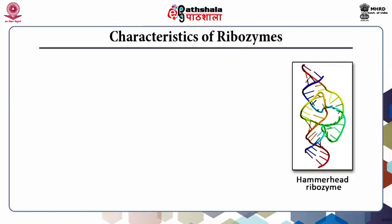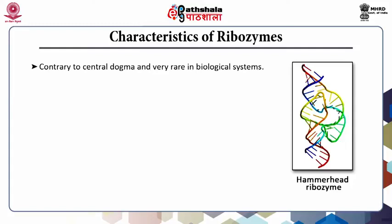Coming to the characteristics of ribozymes: ribozymes are contrary to the central dogma and are rare in living entities but with vital roles in life. The original discovery of ribozymes was in viruses which use RNA for storage of genetic information. These small RNAs were able to cut themselves out of larger RNA molecules without the involvement of any enzyme. Later it was shown that these RNAs were also able to cleave other RNA molecules which contain the NUX pattern of nucleotides, where N stands for any nucleotide, U for uracil, and X for adenine, uracil, or cytosine — making them act like true enzymes.